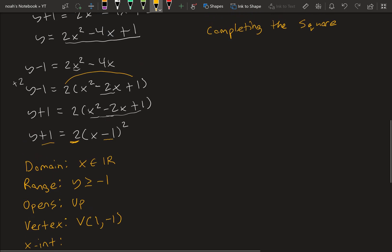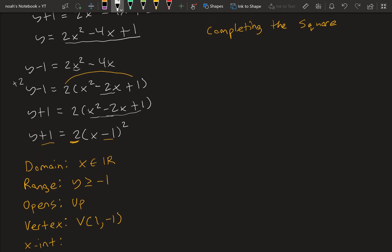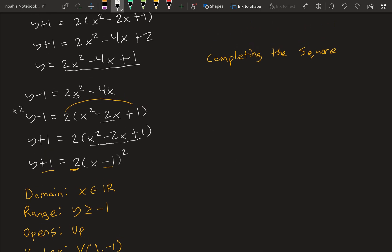So the x-intercept, we can find this by making y equal to 0. Plugging it into this equation right here. So we've got 0 plus 1 is equal to 2 times x minus 1 squared. 1 is equal to 2 times x minus 1 squared. Divided by 2, 1 half is equal to x minus 1 squared.